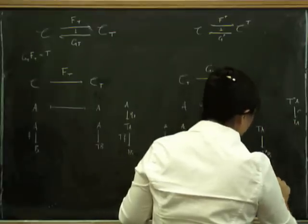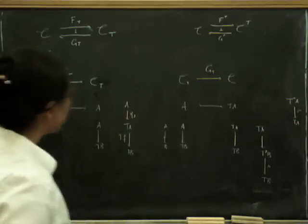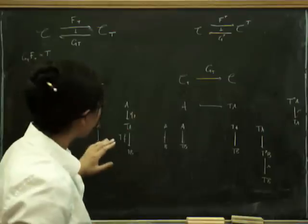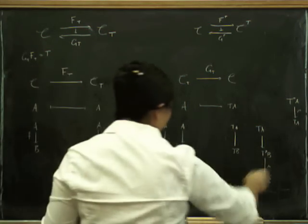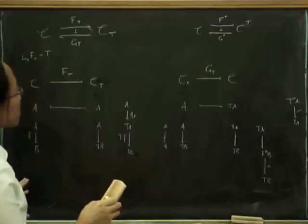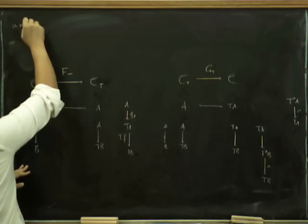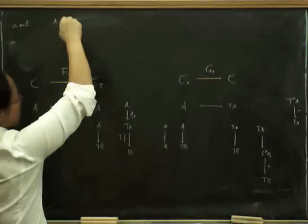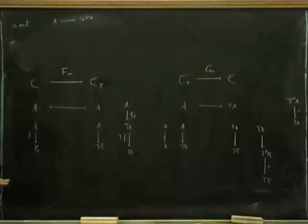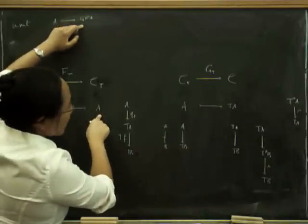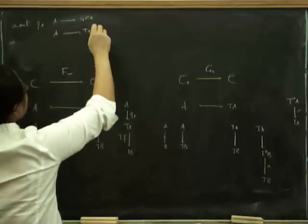That gives a perfectly good functor, which you can verify is functorial. It remains to show the unit and counit. The unit has to go from a to G_T(F_T(a)). F_T(a) is just a, and G_T of that is Ta, so we need a map a → Ta. That's just going to be the unit η for the monad.